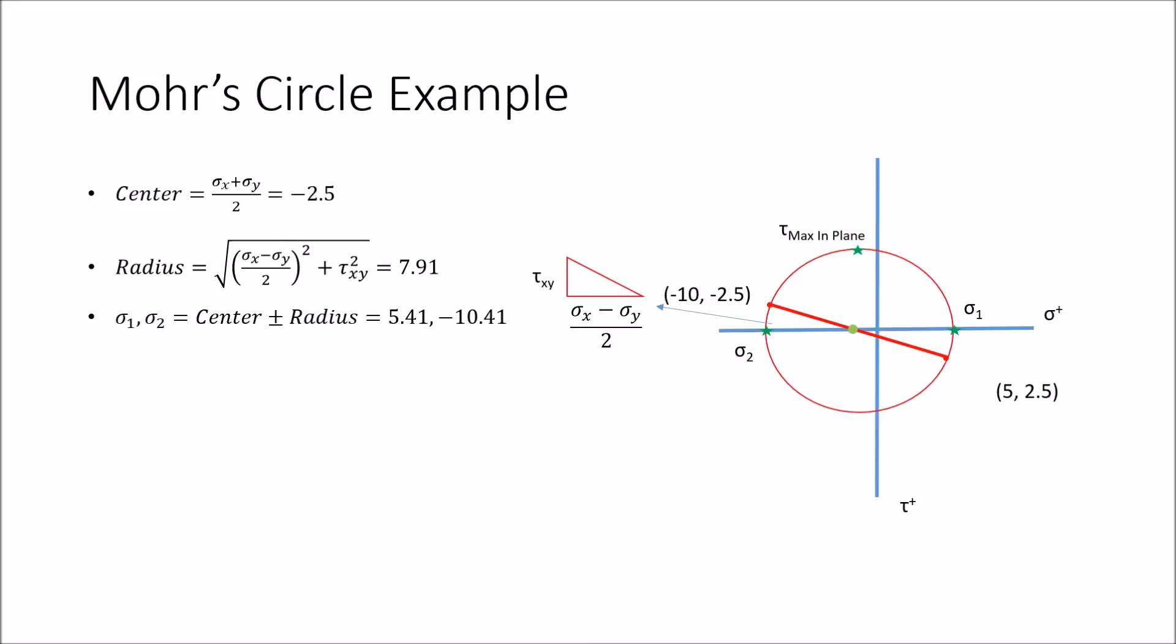Next to calculate the maximum shear stress, this would be at another orientation. You should notice how it looks like it is 90 degrees from the orientation that the principal stresses are at. In the real world, you would only rotate the object 45 degrees.